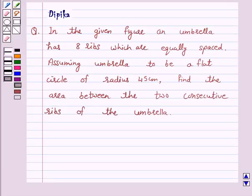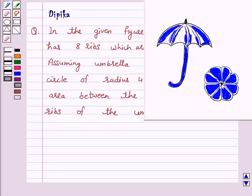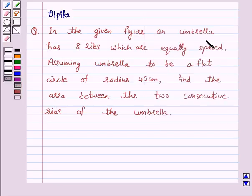Let's discuss a question which says: In the given figure, an umbrella has 8 ribs which are equally spaced. Assuming the umbrella to be a flat circle of radius 45 cm, find the area between the two consecutive ribs of the umbrella.